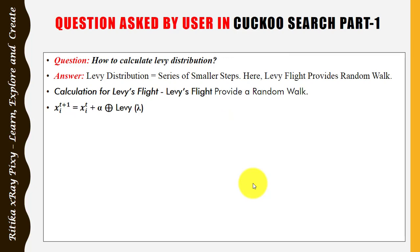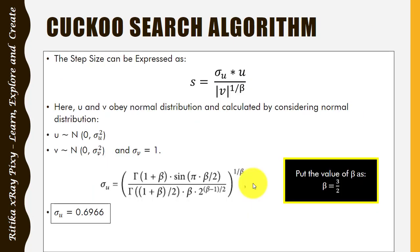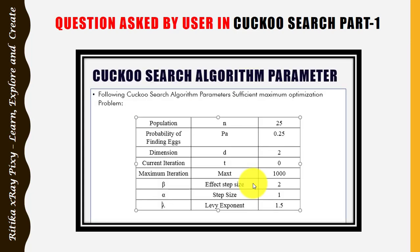Second question: how do we calculate Lévy distribution? Lévy distribution means a series of smaller steps — you can see in the slide how these smaller steps are calculated using Lévy flight. Third question: does entry-wise multiplication mean element-by-element multiplication? Yes — in this example they use vector form, so cuckoo search performs entry-wise multiplication. I've provided all important links in the description box, and if you still have questions, please comment below. Thanks for watching.